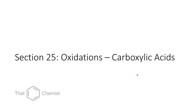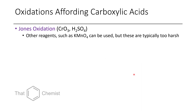With that, let's get into today's material: oxidations that afford carboxylic acids. There are essentially two main strategies that people use, though there's a third we'll talk about briefly. The first is a Jones oxidation, which uses chromium trioxide as well as sulfuric acid. There are other oxidants available for this type of transformation, such as potassium permanganate or nitric acid.